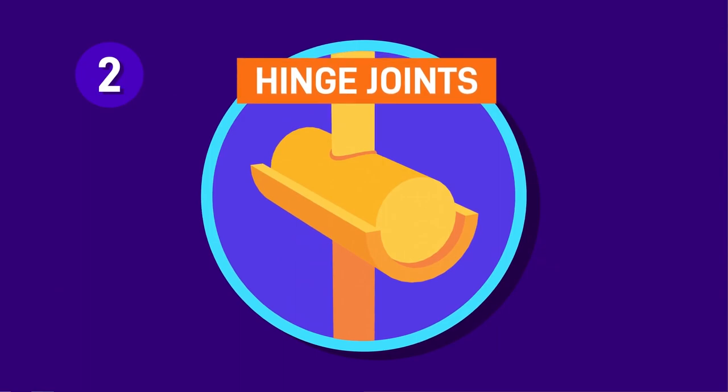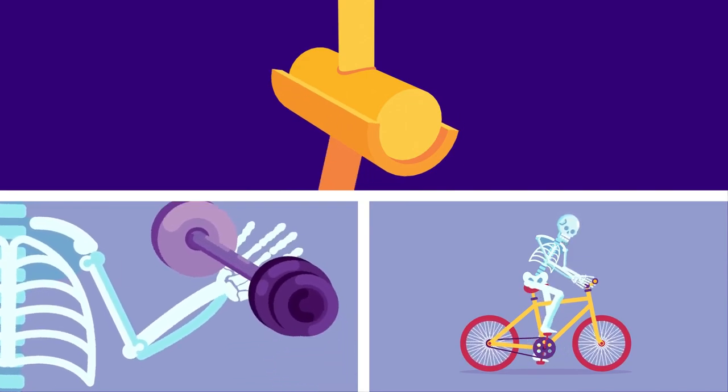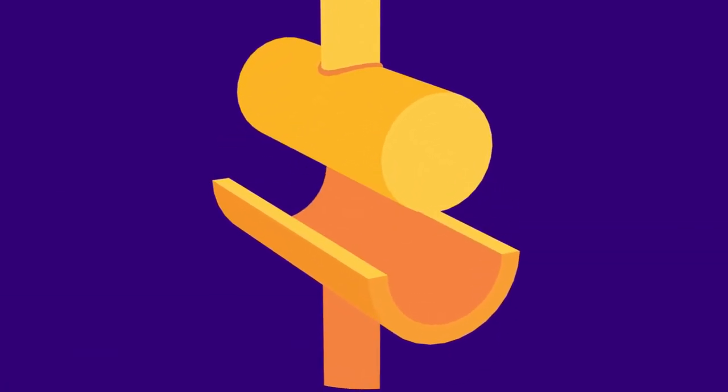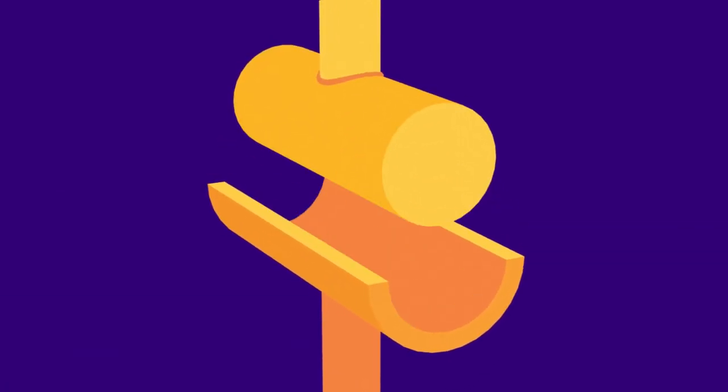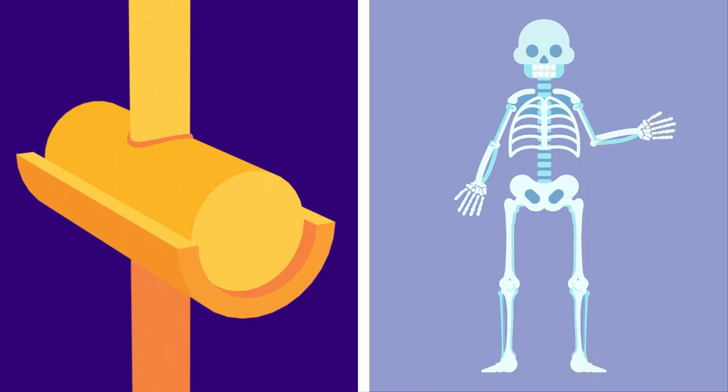Hinge joints. Hinge joints bend our limbs. They make it possible for limbs to flex and extend along only one axis. The joint consists of two bones that fit together. One bone has a convex surface, and the other one has a concave. Elbows, fingers and toes are hinge joints.